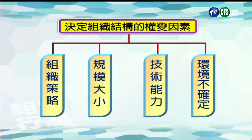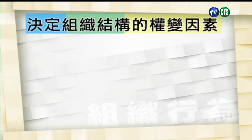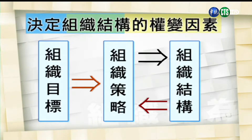这四个权变因素分别是：一、组织策略；二、规模大小；三、技术能力；四、环境的不确定性。以下我们简单说明这四项因素。有关组织策略因素，研究报告显示，组织的目标会受到组织策略的影响，而策略与组织结构之间也有密切的关联性。